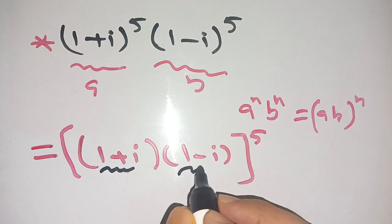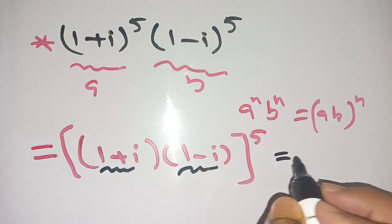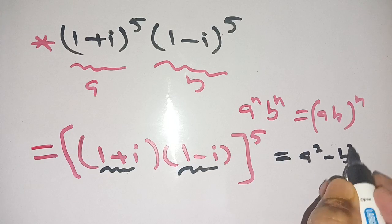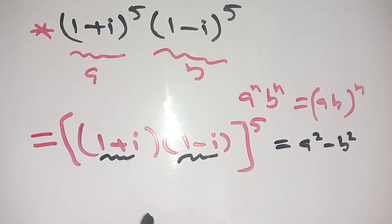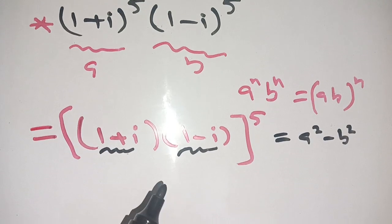Here a is 1 and b is i. On applying this identity we get [1^2 - i^2]^5.